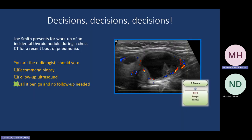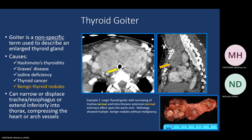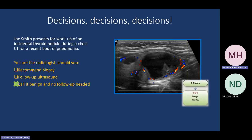So for this example case: it is mainly solid and cystic, and I don't see any bad calcifications. This is something we can call benign — no follow-up needed.